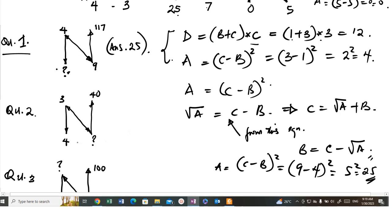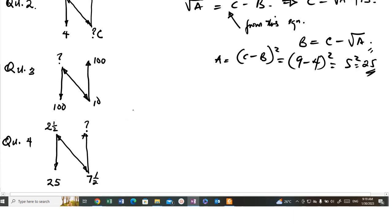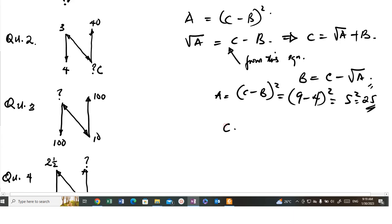Now, for C, this is C. C is unknown here. The formula to get your C, and C is equal to the square root of A plus B. So, C will be equal to the square root of 4 plus B, which is 3. So, this is 2 plus 3. This is equal to 5.